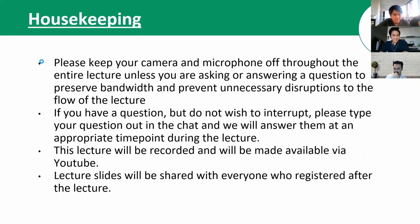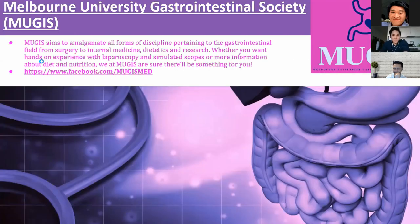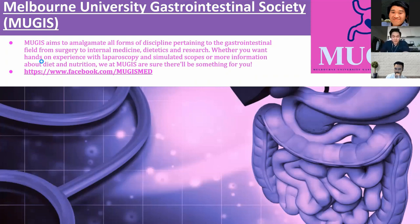Thanks, Alex — that was a pretty good introduction. So yeah, we're MUGIS and we're the first GI society in Melbourne Uni that amalgamates both the surgical and internal aspect of medicine. Join us and you can look forward to amazing events next year. All right, let's begin.